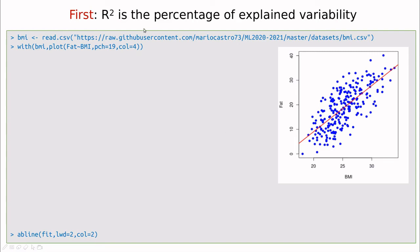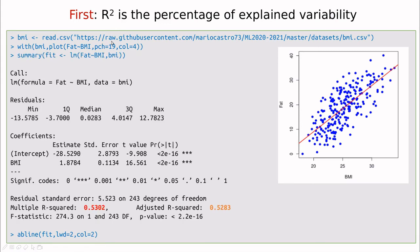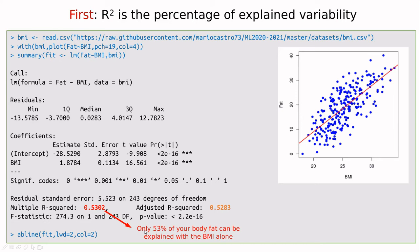Let's do another example and see the three interpretations of R-squared. The first interpretation is the percentage of explained variability. Let's take body mass index and body fat. If we take the regression, we can see that R-squared is 0.53. In common language, this means that 53% of your body fat can be explained with body mass index alone. This doesn't sound that much, but it's not bad — body mass index is something you can compute at home with a scale and a ruler.